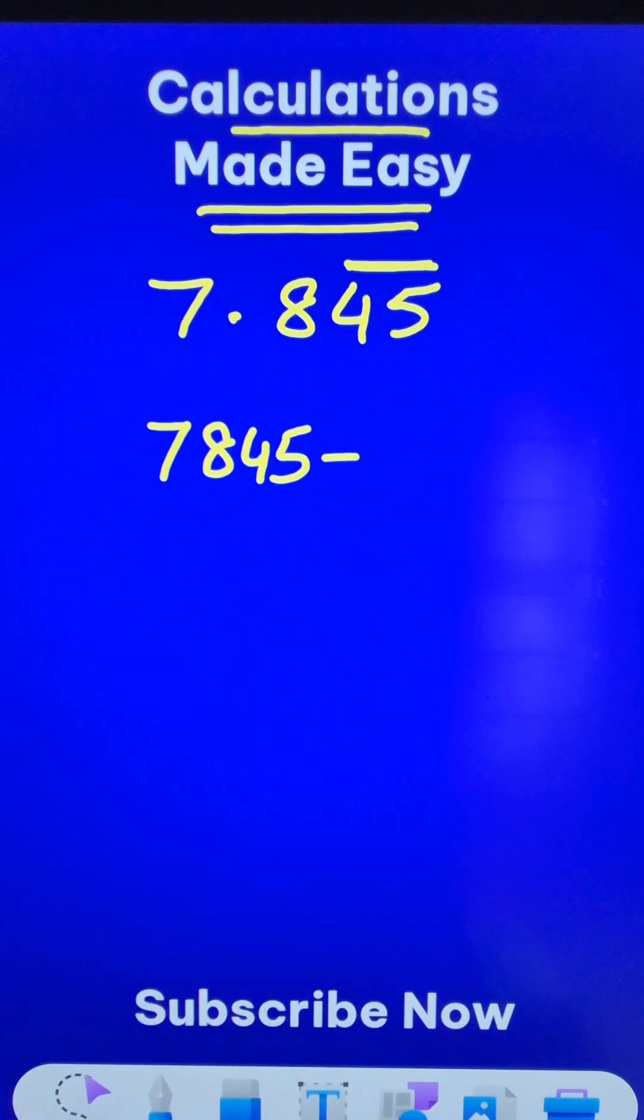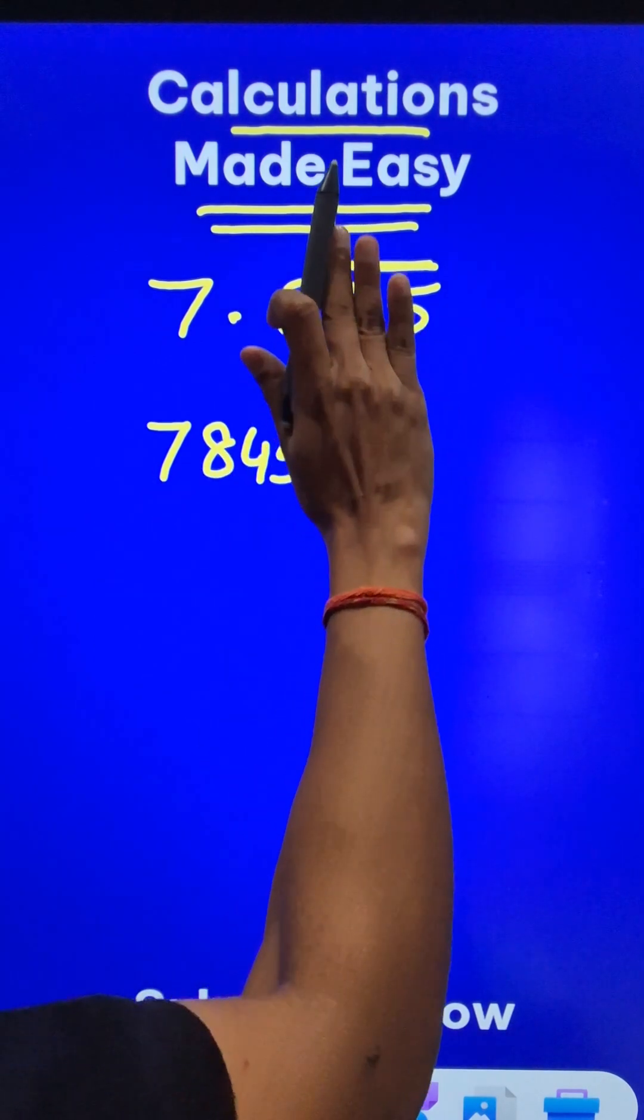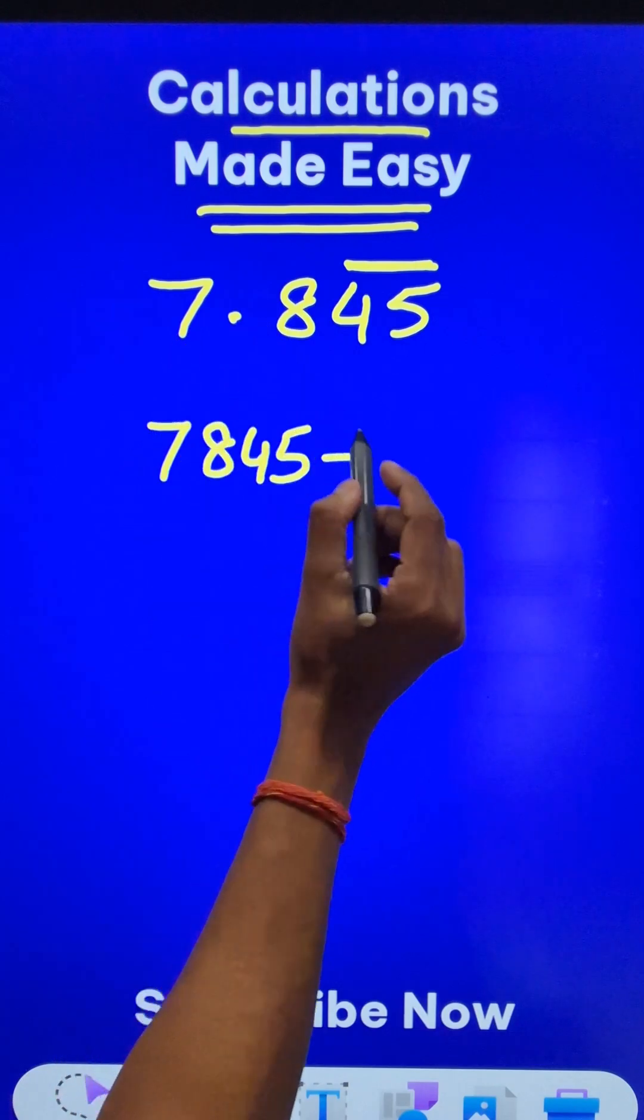Now we need to subtract something from this. The bar is over 45, so just ignore 45. We have 78.